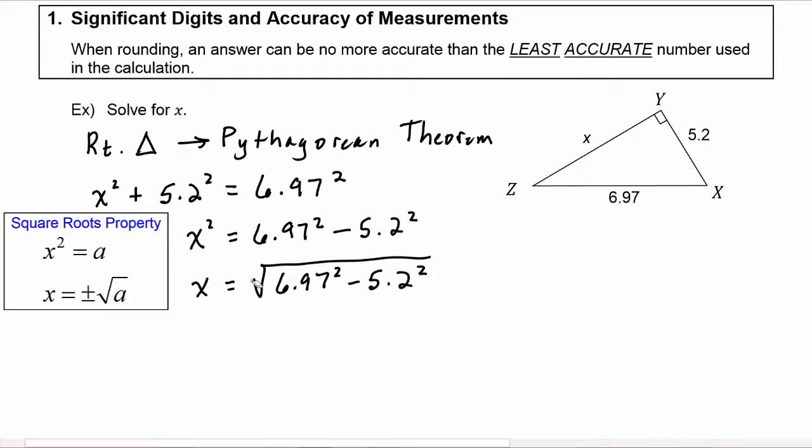Now we don't put a plus or minus in front of this one, even though the square roots property would tell us to do that, because we know that x is the length of a side of a triangle and it absolutely positively has to be positive.